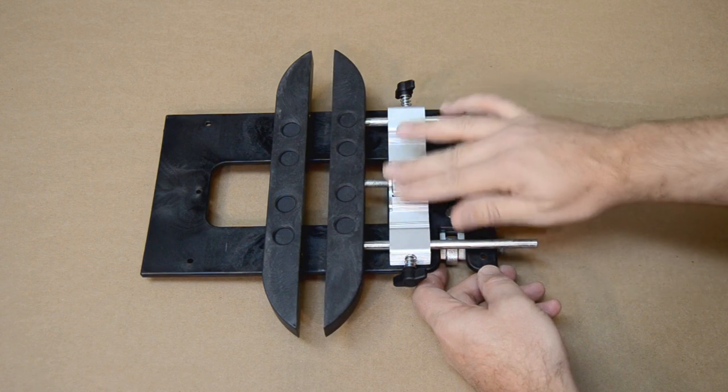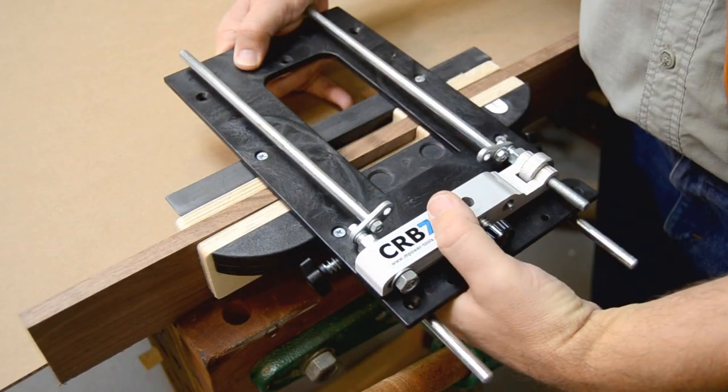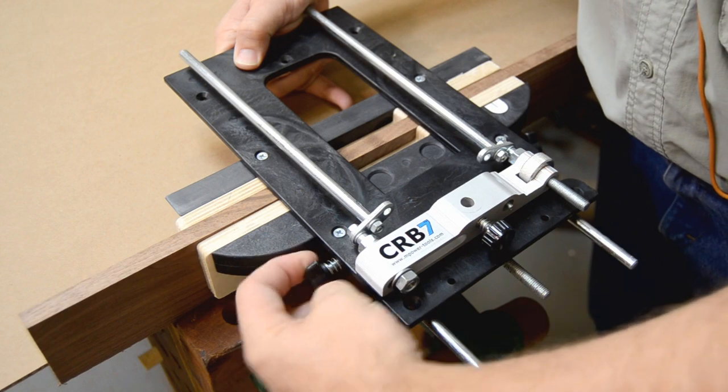A thumbwheel controls the final position of the movable jaw, allowing the MHL to be accurately set to the stock being worked.